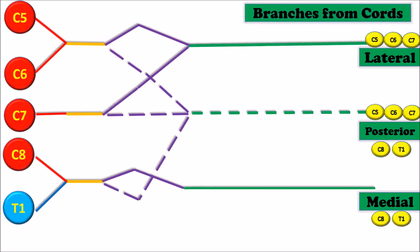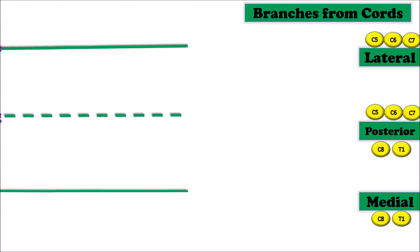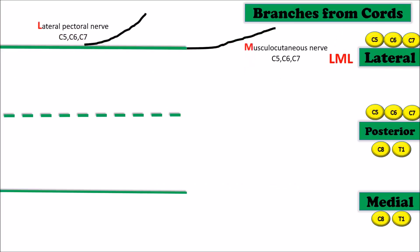Branches of the lateral cord can be remembered with a mnemonic LML: lateral pectoral nerve, musculocutaneous nerve, and lateral root of median nerve.